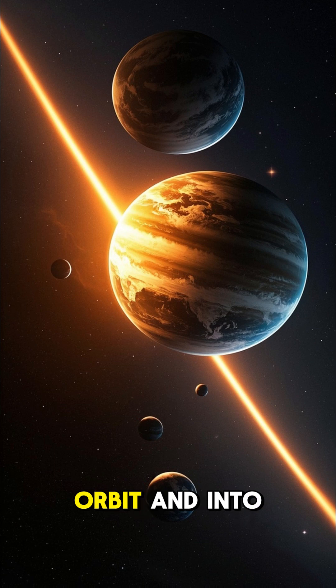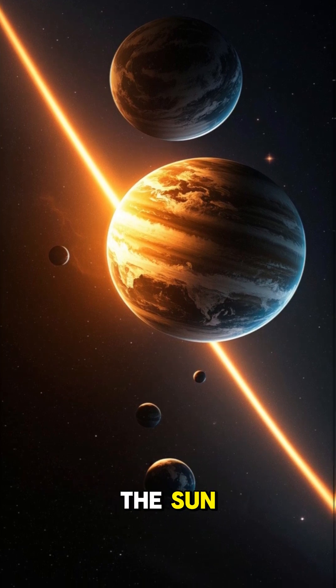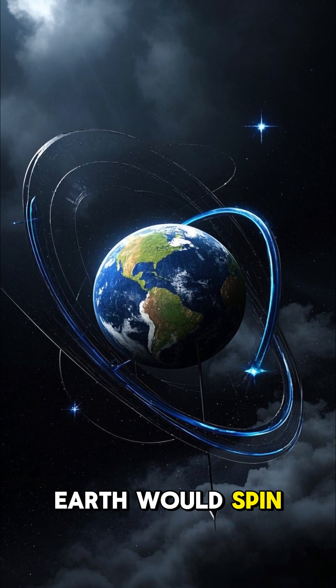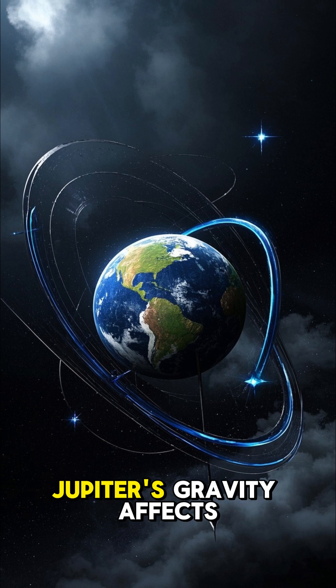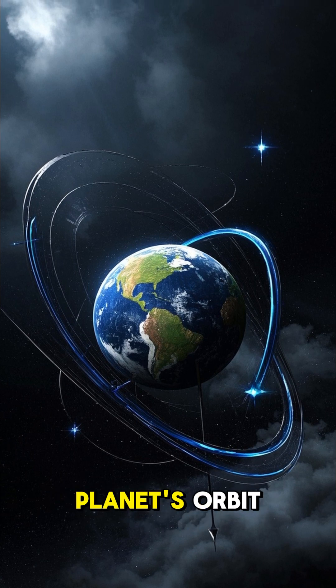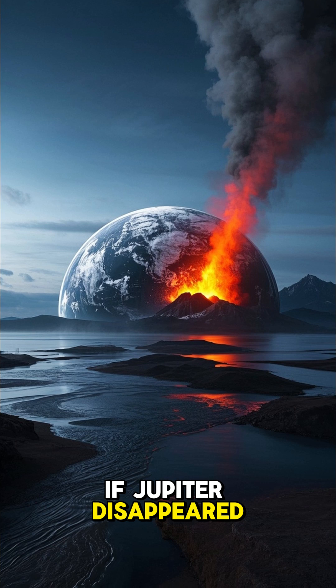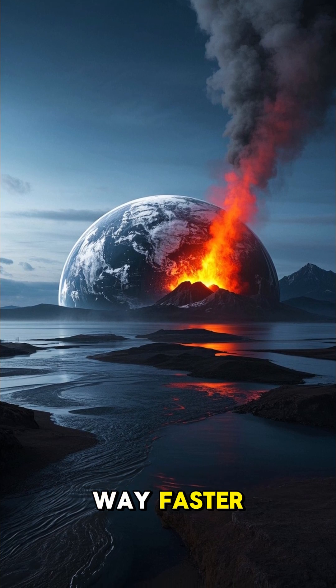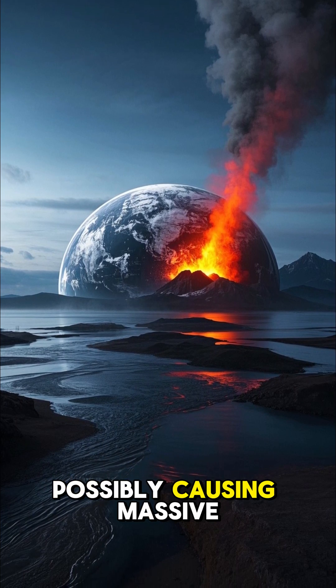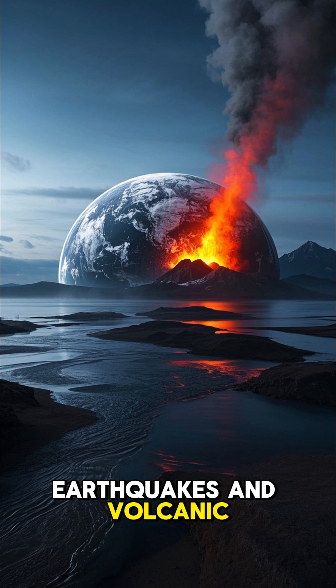Three, Earth would spin out of control. Jupiter's gravity affects not only our planet's orbit, but also its rotation. If Jupiter disappeared, Earth would spin way faster, possibly causing massive earthquakes and volcanic eruptions.